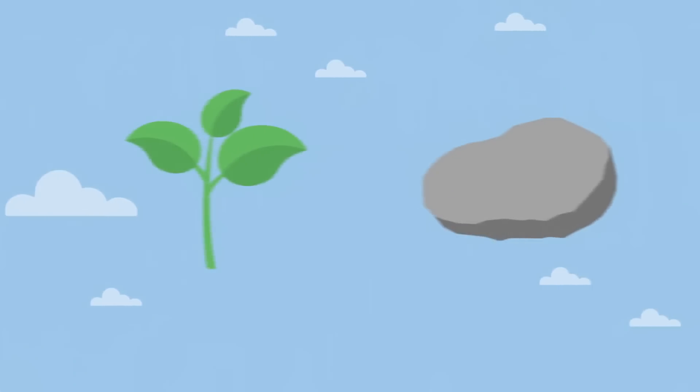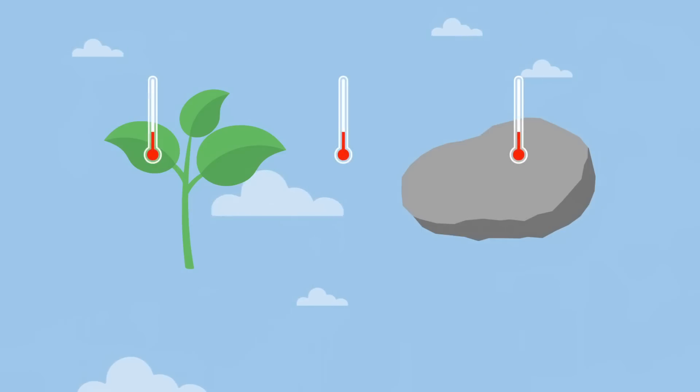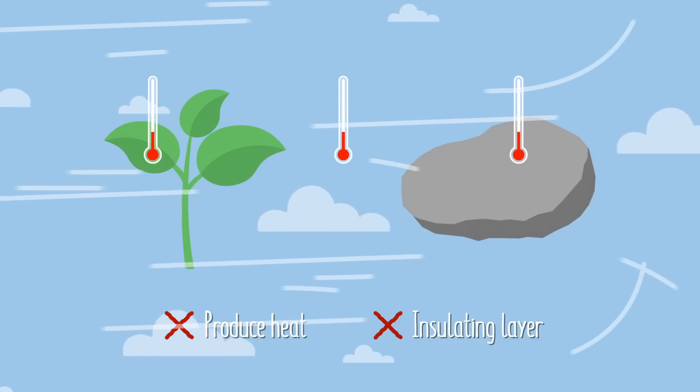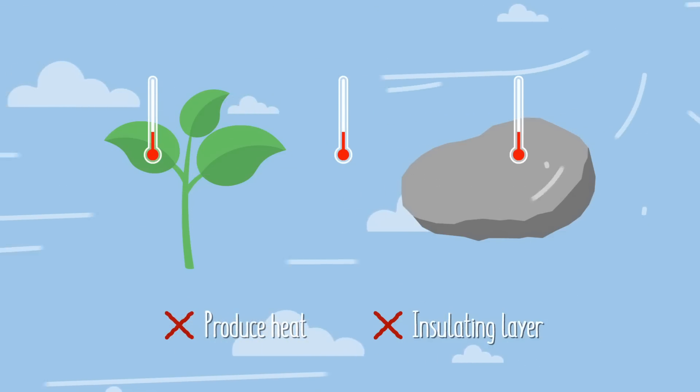And the simple answer is that, like the rocks in our first example, plants that live outside are already at the ambient temperature, because they don't produce their own heat like we do, and they don't maintain an insulating layer of warm air either. So, because there's no temperature difference, the wind provides no additional cooling effect. Windy or not, the plants are already as cold as the air.